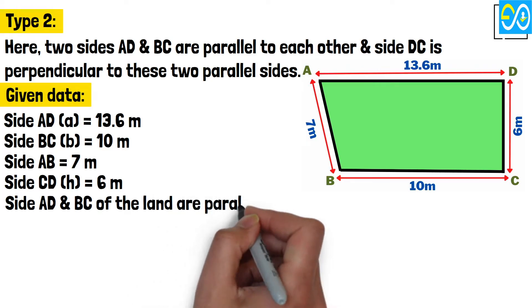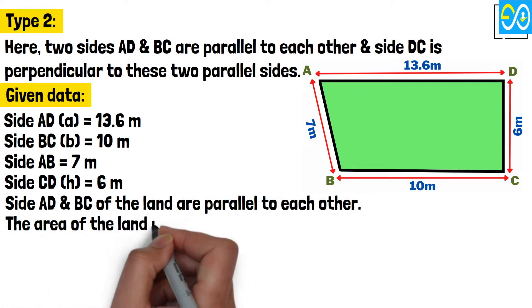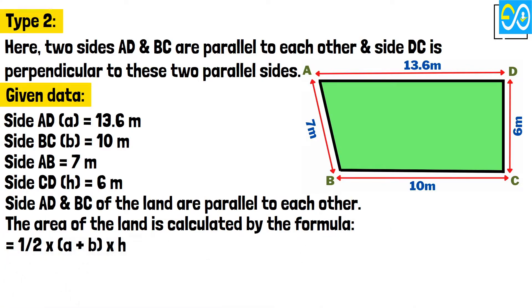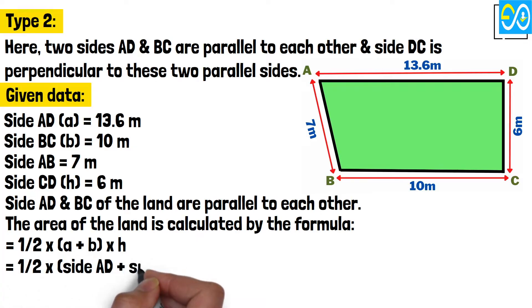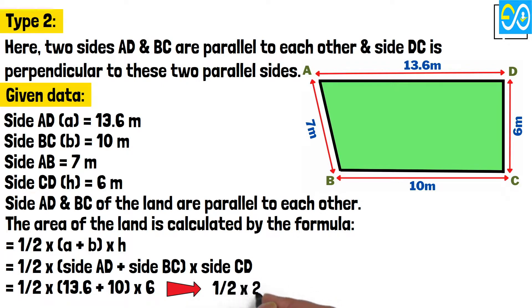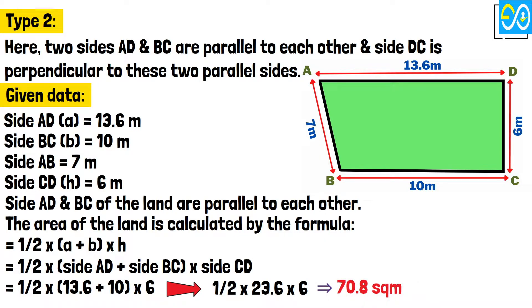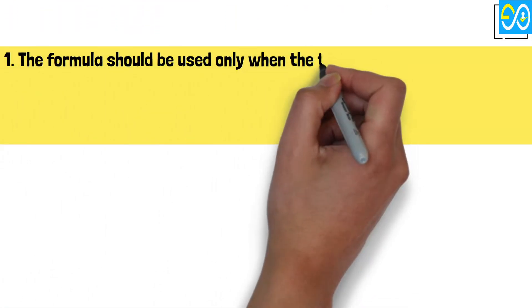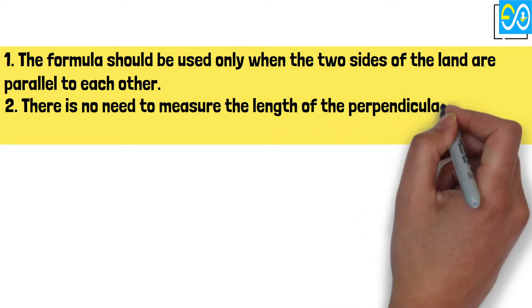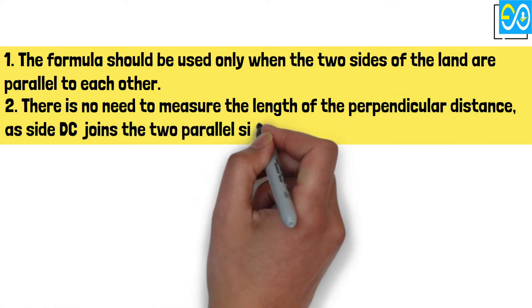Side A, D and B, C of the land are parallel to each other. The area of the land is calculated by the formula: equals half times A plus B times H. Equals half times side A, D plus side B, C times side D, C. Equals half times 13.6 plus 10 times 6. Equals half times 23.6 times 6, equals 70.8 square meters. Note: The formula should be used only when the two sides of the land are parallel to each other. There is no need to measure the length of the perpendicular distance, as side D, C joins the two parallel sides at a 90 degrees angle.